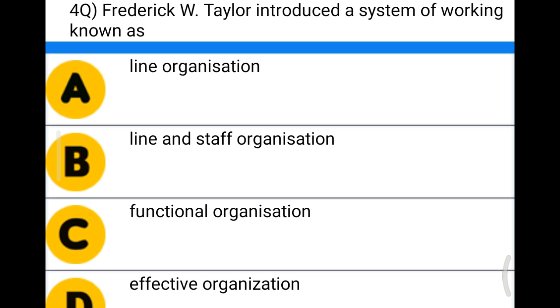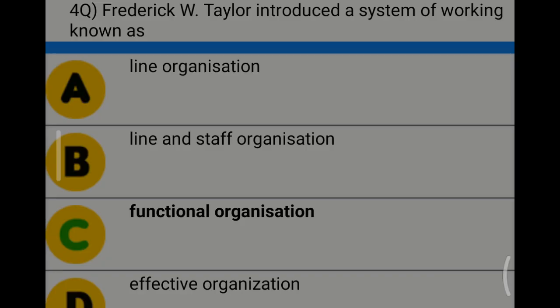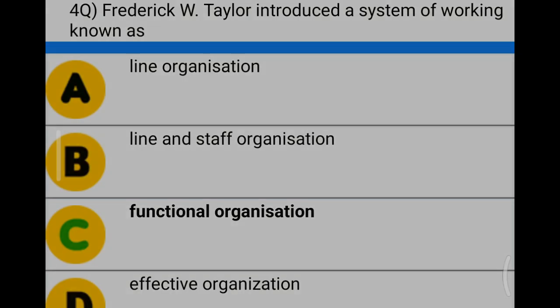Option A: line organization, Option B: line and staff organization, Option C: functional organization, Option D: effective organization. The correct answer is Option C, functional organization.